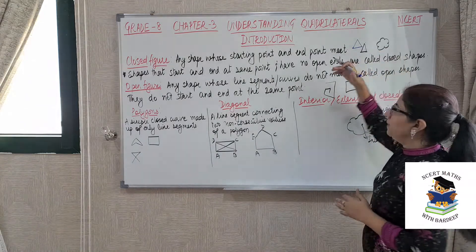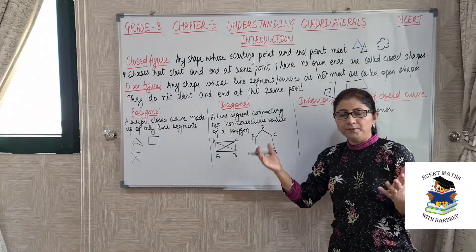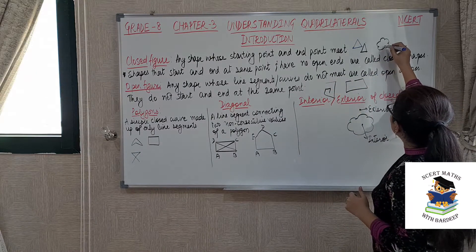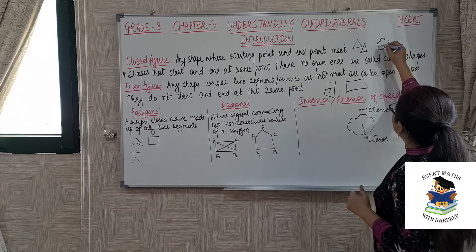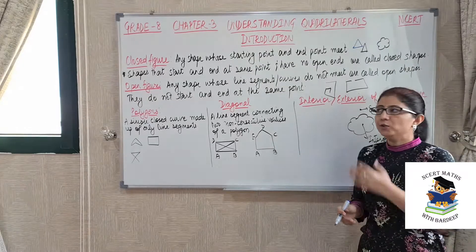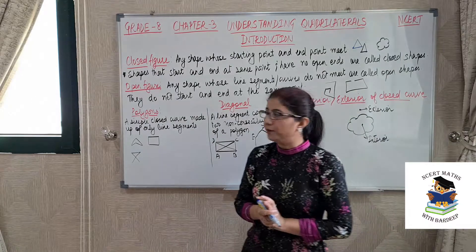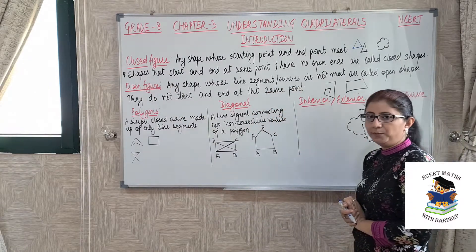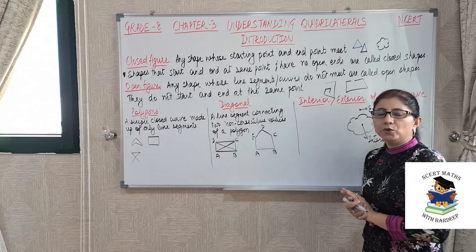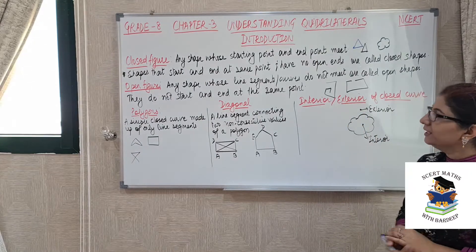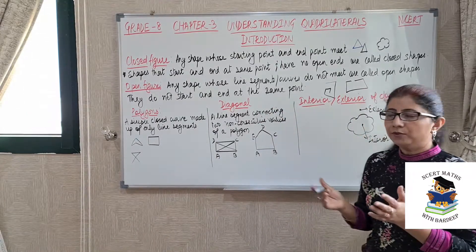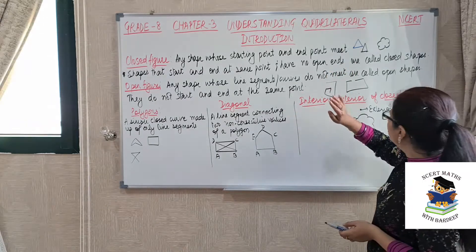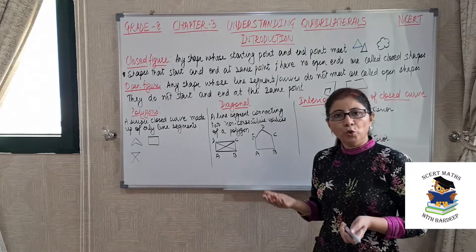So this shape also — that means closed figure can be made up of any line segments or any curves. In this shape also, the curve is starting from this point, it will go around and then come back to its original point. So this is also a closed figure. Or we can say that shapes that start and end at the same point and have no open ends are called closed shapes. So what is an open figure?